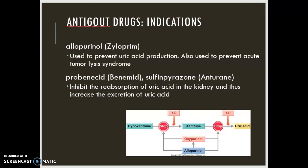The indications for allopurinol and those interval medications are to prevent the uric acid from accumulating in the first place. Allopurinol, also called Xyloprim, is what we call a xanthine inhibitor. What it does is decrease the uric acid in the serum by inhibiting uric acid synthesis. You'll see that in this diagram here.